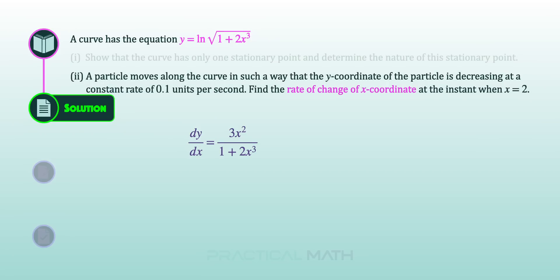For Part 2 of the question, we use the same derivative of y for connected rates of change. To find dx/dt, we write it as a product of fractions: dx/dy multiplied by dy/dt. The missing connecting quantity is dy, since we have found dy/dx and we are given dy/dt — the y-coordinate is decreasing at 0.1 units per second, so dy/dt = −0.1.